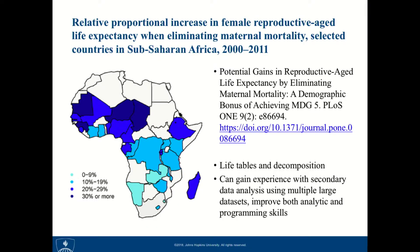A second example is a project focused on secondary data analysis where we were estimating gains in reproductive life expectancy among women 15 to 49 — estimating how much longer women would live if we eliminated maternal mortality. In this chart, the darker areas represent high maternal mortality, where there would be significant gains in reproductive age life expectancy if maternal mortality was eliminated.